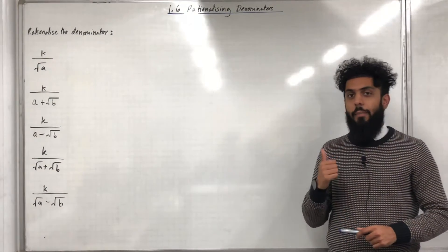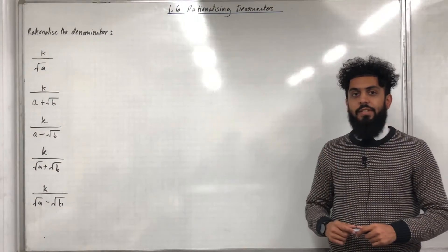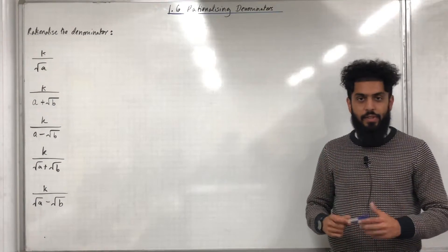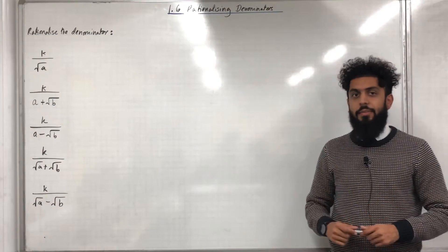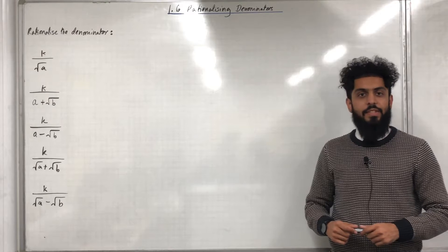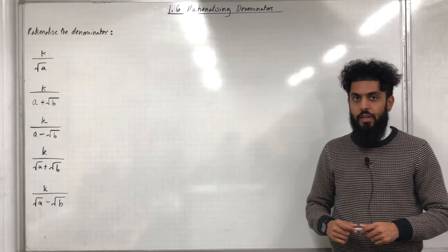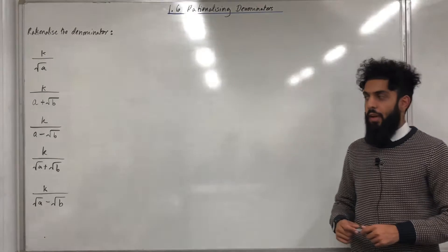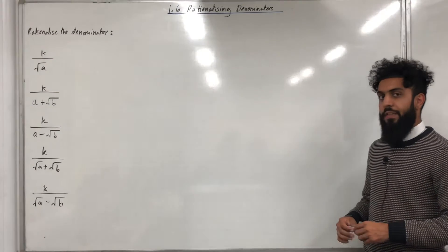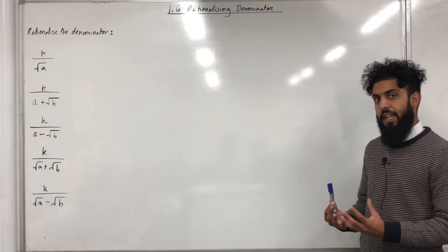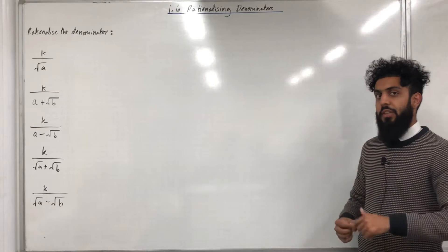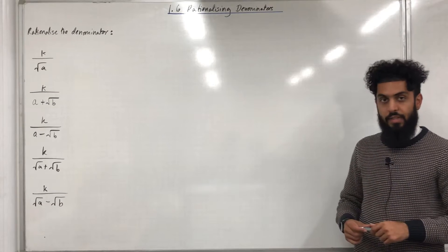In this video I'll be looking at 1.6 Rationalising Denominators. 1.6 represents Chapter 1, Section 6 of the Pearson A-Level Maths Year 1 Textbook. I'm going to start off the section by explaining what it means to rationalise the denominator.